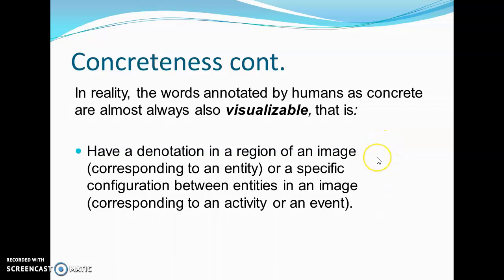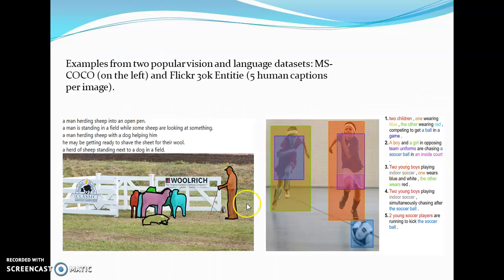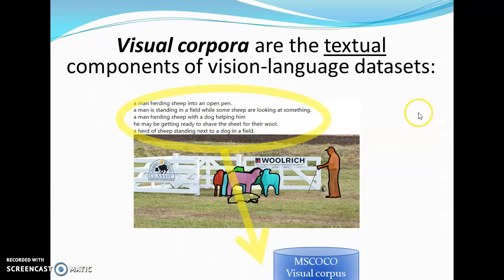And this is where we make the connection between vision-language datasets and metaphor detection. These datasets match text and images, which can be done in several different ways. And by definition, the text is highly visualizable. Therefore it is enough and also quite powerful to use only the textual part of these datasets, what we call the visual corpora.